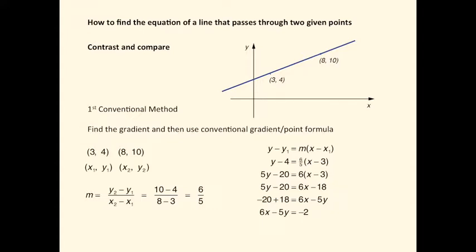First of all, you need to find the gradient m by subtracting the y coordinates, subtracting the x coordinates: 10 minus 4, 8 minus 3, and then the change in y over the change in x gives 6 over 5.